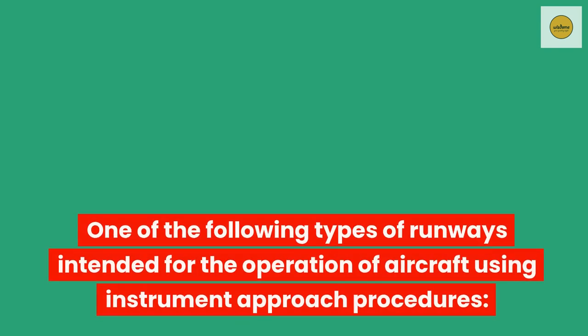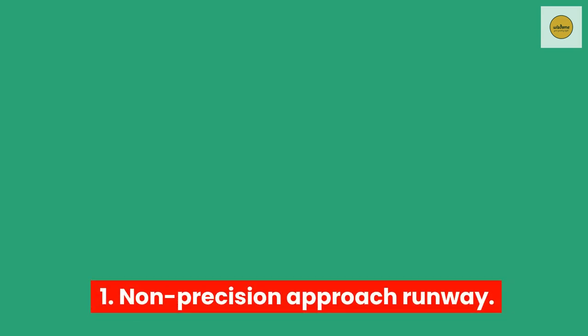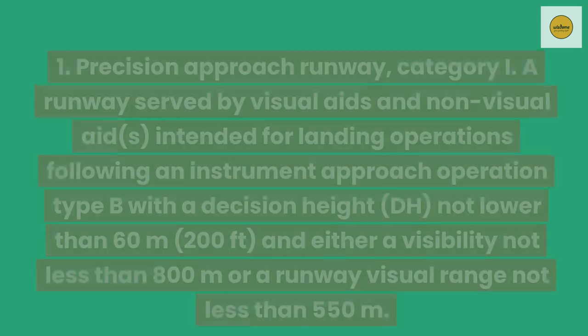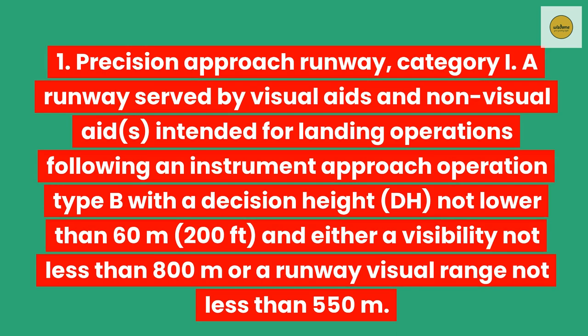Instrument runway. One of the following types of runways intended for the operation of aircraft using instrument approach procedures. (1) Non-precision approach runway. A runway served by visual aids and non-visual aids intended for landing operations following an instrument approach operation type A under visibility not less than 1000 meters. (2) Precision approach runway, Category I. A runway served by visual aids and non-visual aids intended for landing operations following an instrument approach operation type B with a decision height (DH) not lower than 60 meters (200 feet), and either a visibility not less than 800 meters or a runway visual range not less than 550 meters.